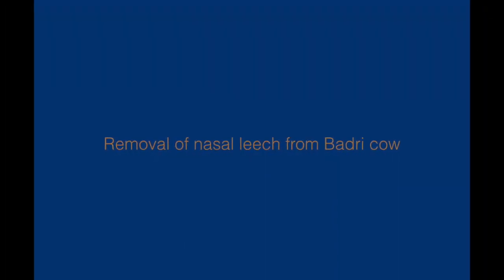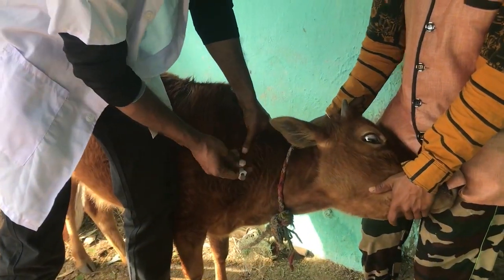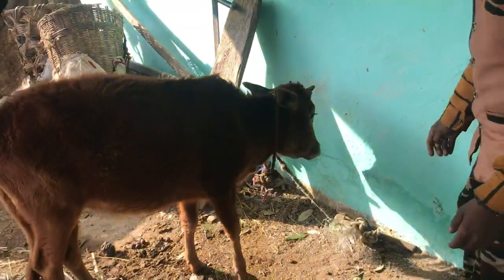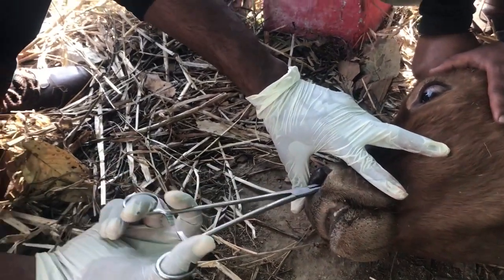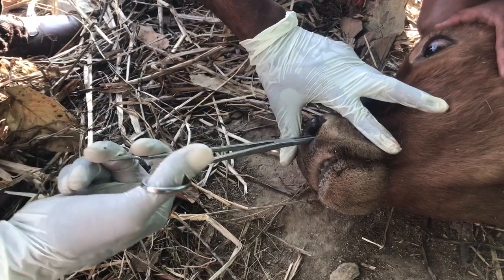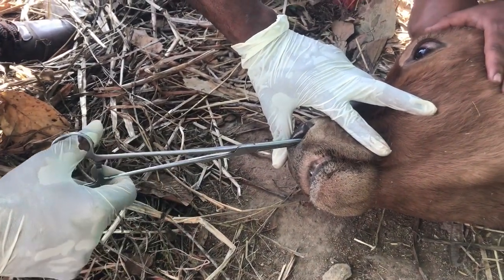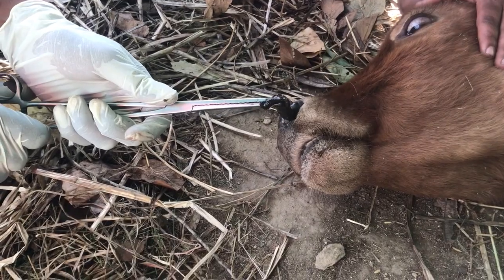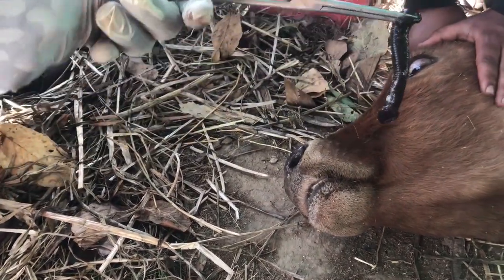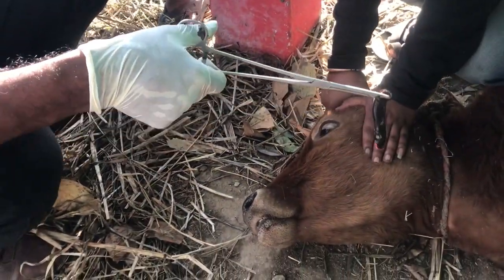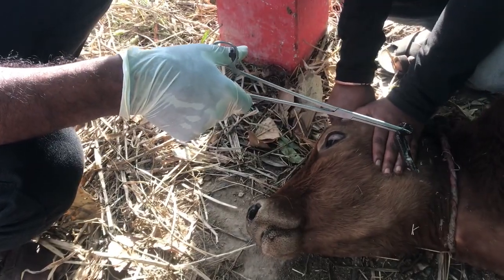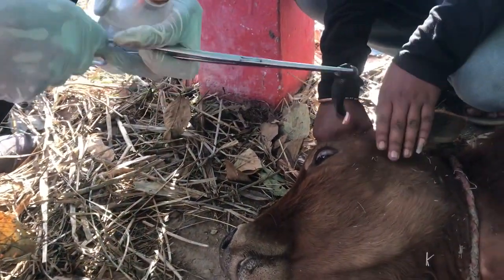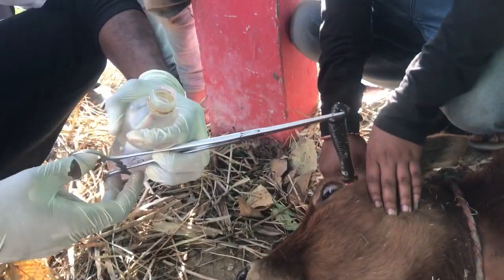Removal of leach from nostrils of padri cattle: Sedate the animal with xylazine. The nostrils of cattle are spacious so the leach can be visible to you. Insert the artery forceps, hold the leach, and carefully remove it.